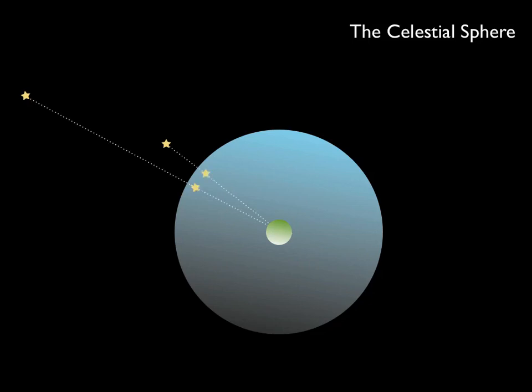In this case, the two stars at a very different distance appear nearby, projected onto the celestial sphere. Their projected distance is much smaller than their true distance.